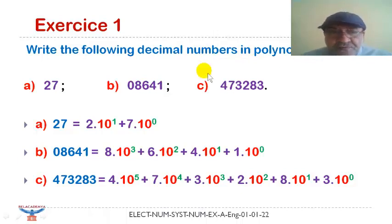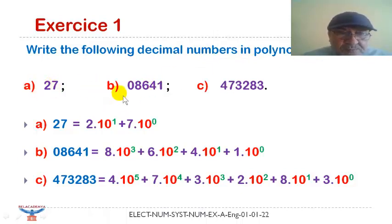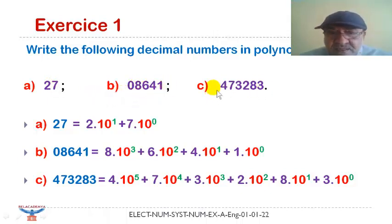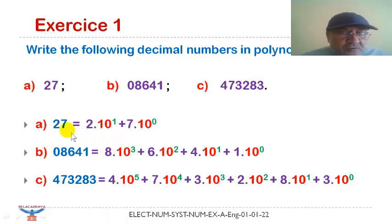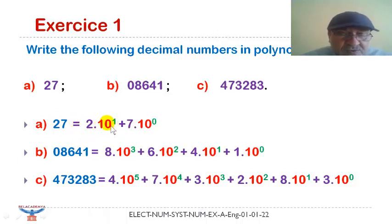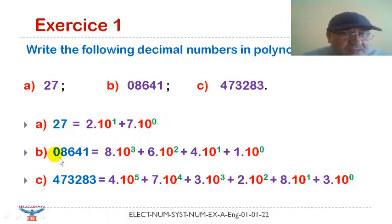To start, we have to write the following numbers in polynomial form: A) 27, B) 01641, C) 473283. For the first one, 27 is equal to two multiplied by ten to the power one, plus seven multiplied by ten to the power zero. For the second one, the leading zero doesn't count.